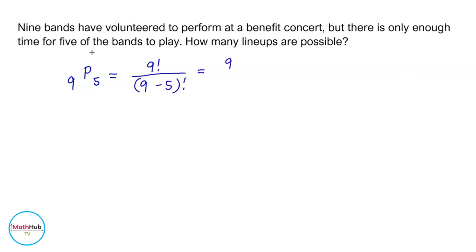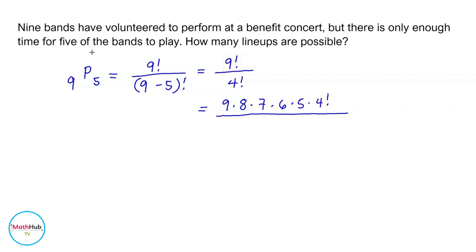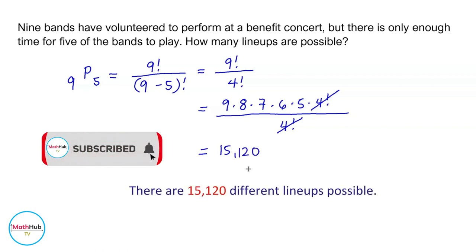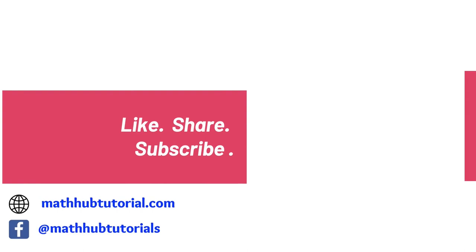Using the permutation formula, this is equal to nine factorial divided by nine minus five factorial. Nine minus five is equal to four, so we have nine factorial over four factorial. We rewrite nine factorial as nine times eight times seven times six times five times four factorial, copy four factorial in the denominator, then cancel four factorial. We're left with nine times eight times seven times six times five, which is equal to 15,120. So there are 15,120 different lineups.